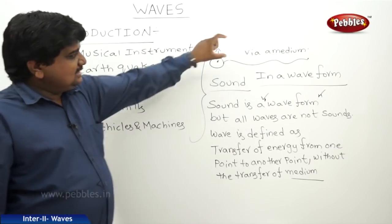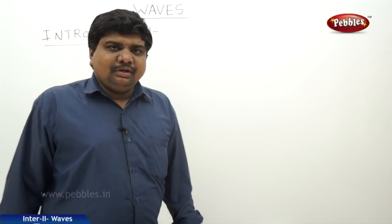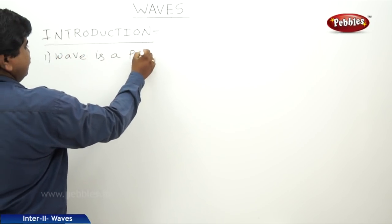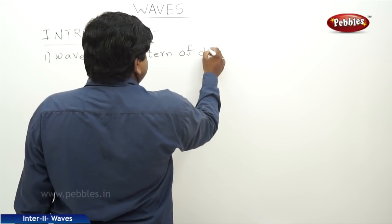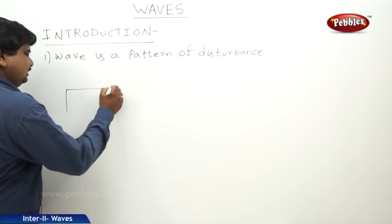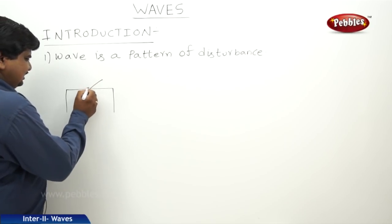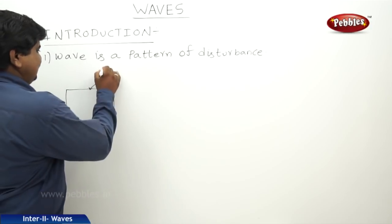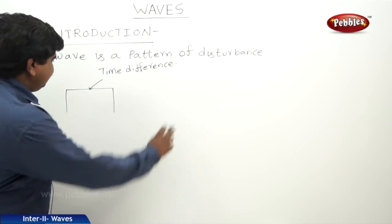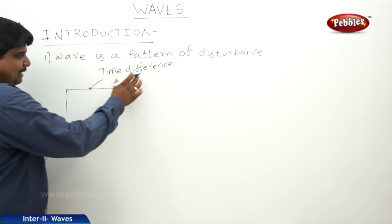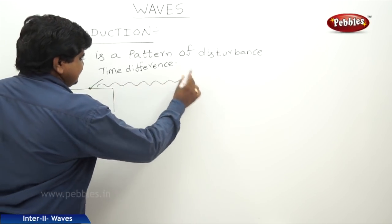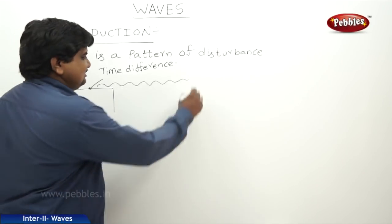We will now discuss what a wave is, the types of waves, and the generation of waves. From the introduction, we can say that a wave is a pattern of disturbance. If you want to produce a wave, take a solid body — a bench, a kettle, whatever it is — and beat it with a stick continuously, maintaining the same time difference from one beat to the next. This produces a disturbance that travels to longer distances. The ability of this disturbance to transfer depends upon the surrounding medium.